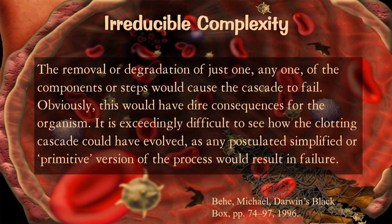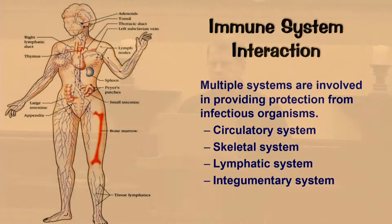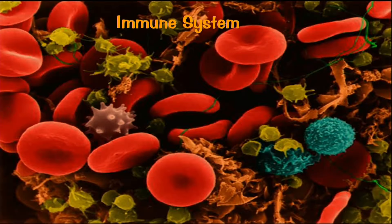The immune system — also a part of the circulatory system, your lymphatic system, and your integumentary system — is responsible for providing protection from infectious organisms and viruses. Multiple systems are involved here that are interdependent, including the circulatory system and the skeletal system, which makes cells for the immune system. There are multiple specialized cells, collectively called white blood cells.